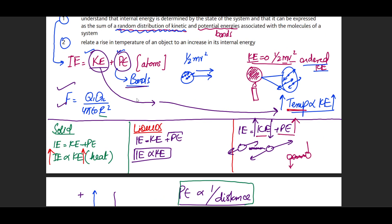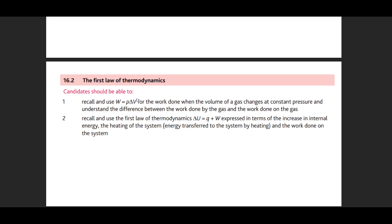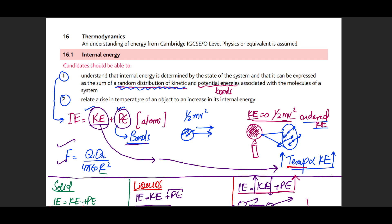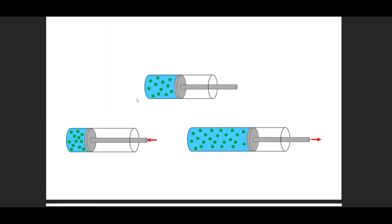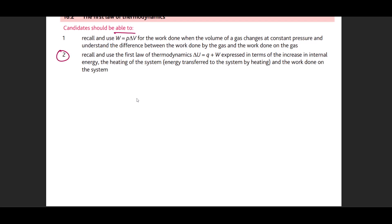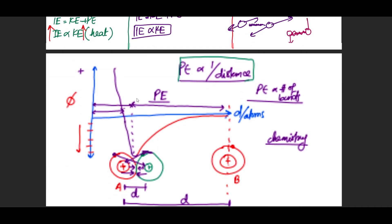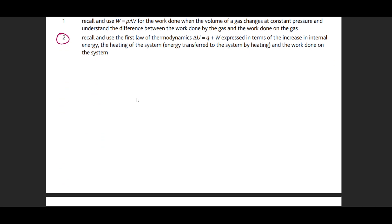For gases, both kinetic and potential energies are important — this is how we refer to it in examinations. Now moving to the syllabus content: we understand the first point on internal energy and the second on rise in temperature. The first law of thermodynamics is the physical manifestation of the internal energy concept. Internal energy equals the sum of kinetic energies plus the sum of all potential energies of all atoms in the system.